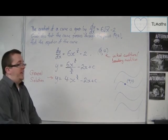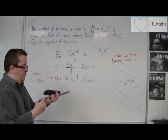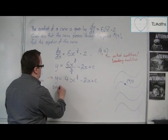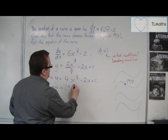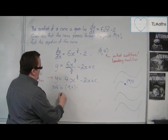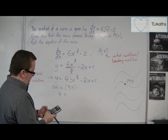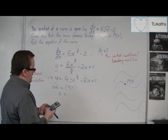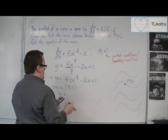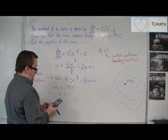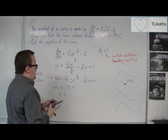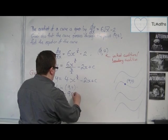And that will give us a particular solution. So if we sub in (9,4), we're going to get 4 = 4 × 9^(3/2) - 2 × 9 + c. So we've got 90 + c.